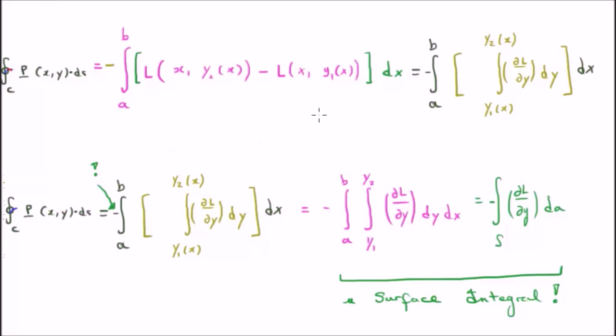So let's write the whole thing again. I've rewritten it here and put both integrals together. We have our minus sign and both integrals—one with respect to x and the other with respect to y. So what we have is the double integral with respect to x and y of the function ∂L/∂y evaluated at different points.